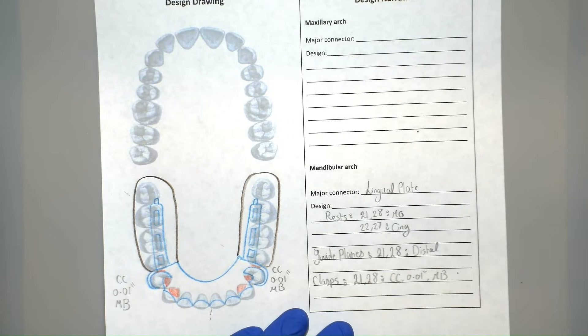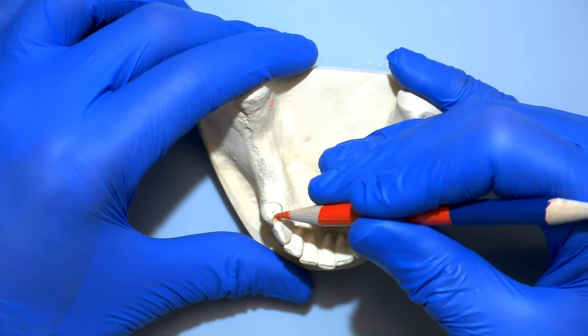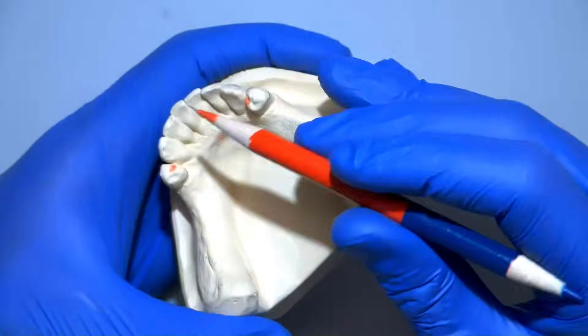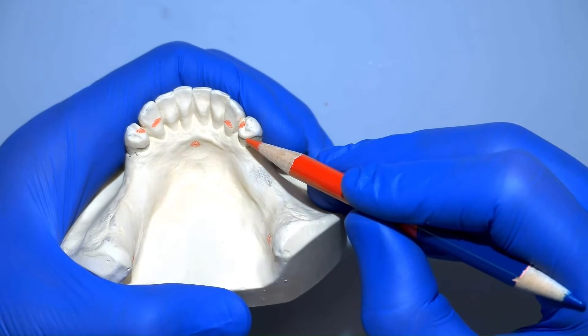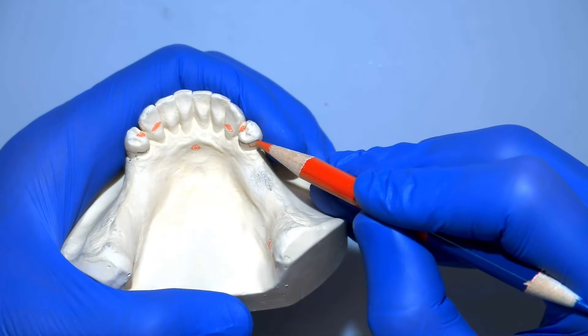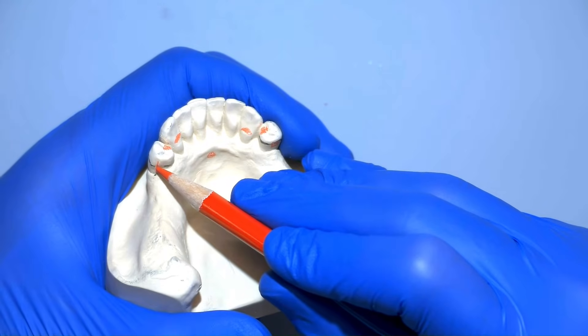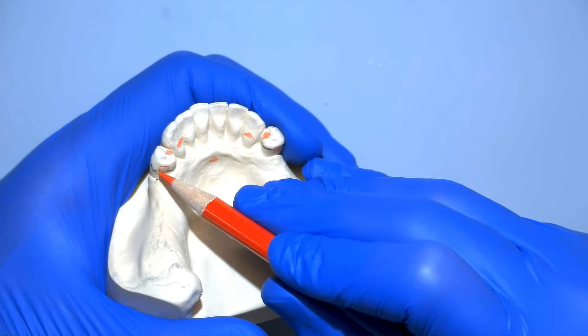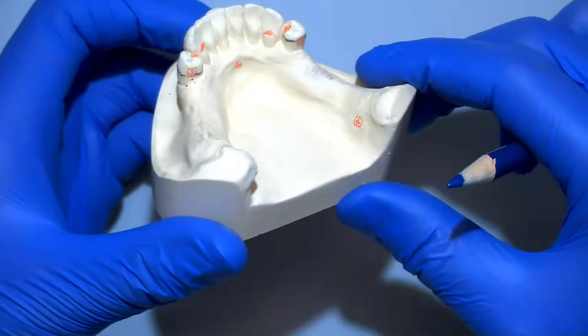We can now transition to drawing the same design, but on the cast. We will start by drawing our rest seats in red. The next thing to do is to draw the areas of the guide planes. Red denotes areas included in the mouth preparation. That includes areas like guide planes and undercuts that are going to be added or adjusted on the patient's mouth.